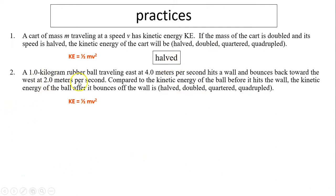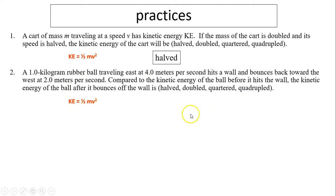Another example: a one-kilogram rubber boat traveling east at 4 meters per second hits a wall and bounces back toward west at 2 meters per second. The speed has halved. If you halve your speed, kinetic energy will become quartered. So the answer is quartered.